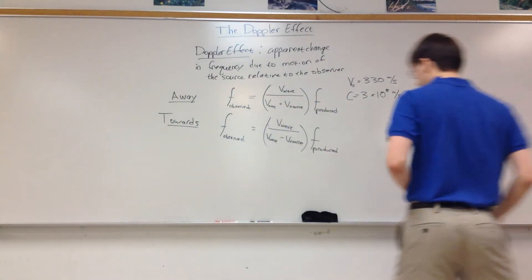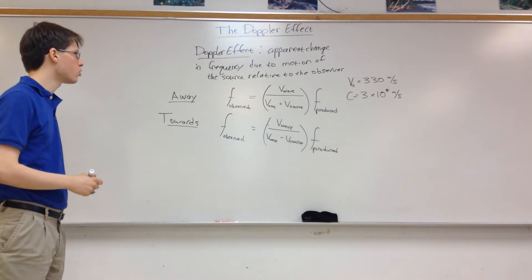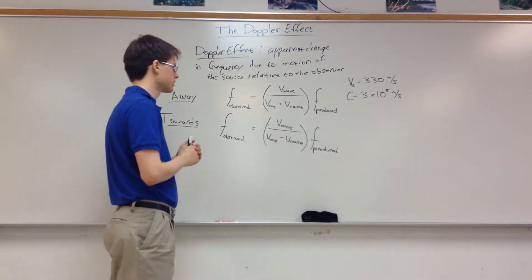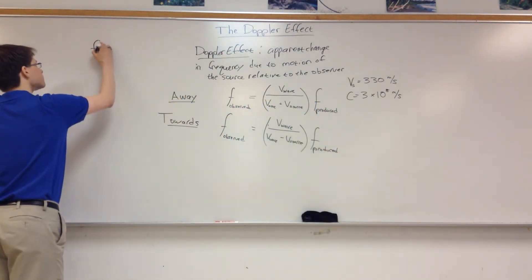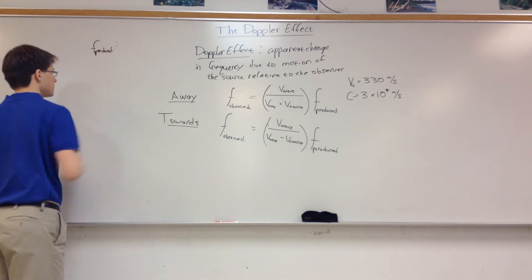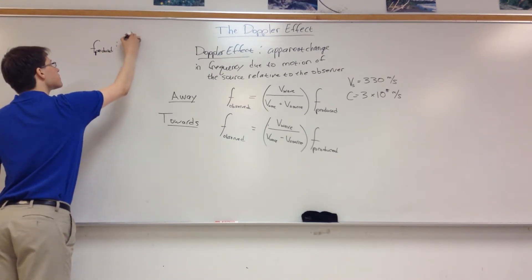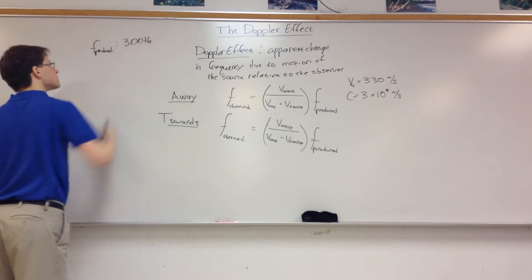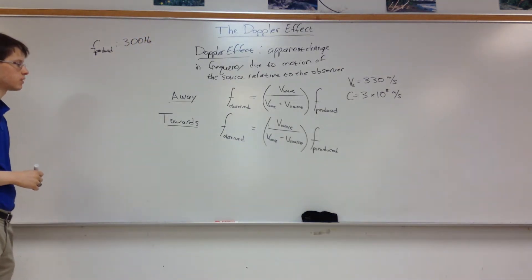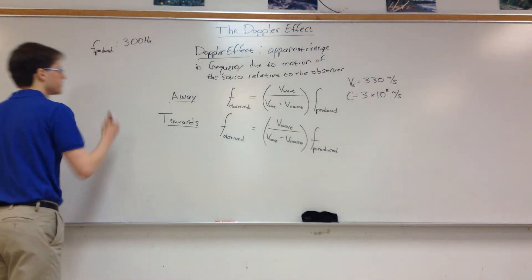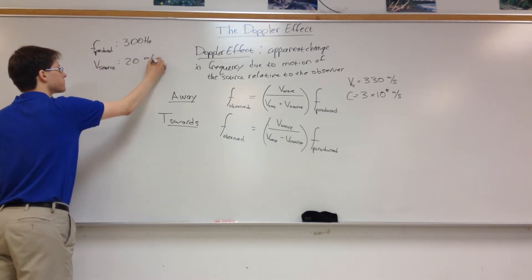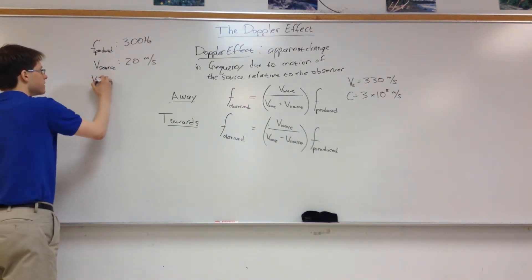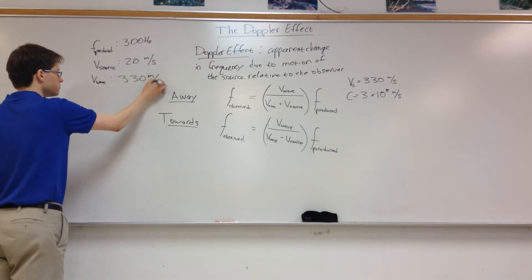So, you know, for a quick example, we can say, suppose I am producing a wave with a frequency of, let's say I am producing a frequency of, I don't know, 300 hertz. And I want to know what frequency I am going to observe if my source is moving at 20 meters per second. And let's say the velocity of the wave is sound and will be 330 meters per second.